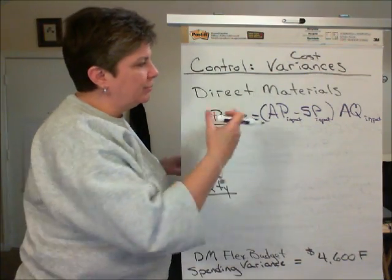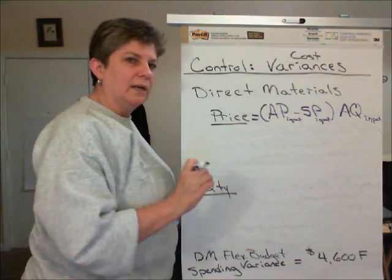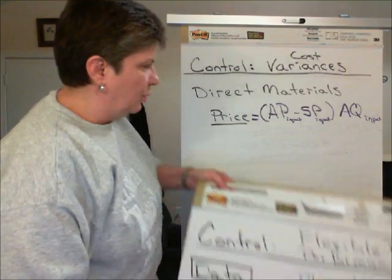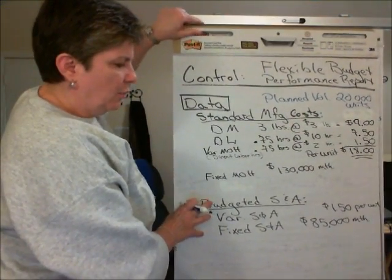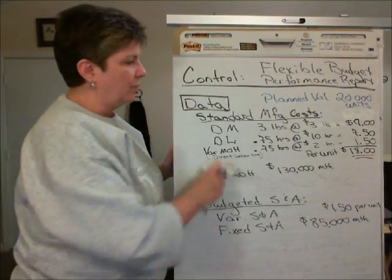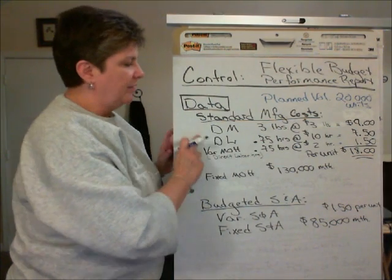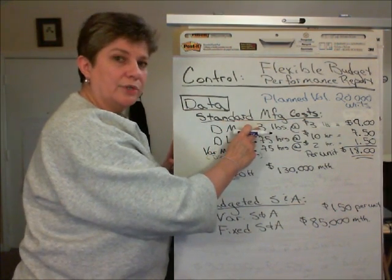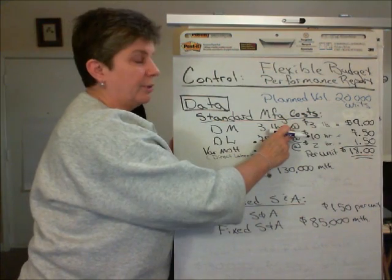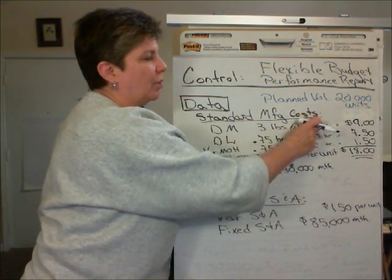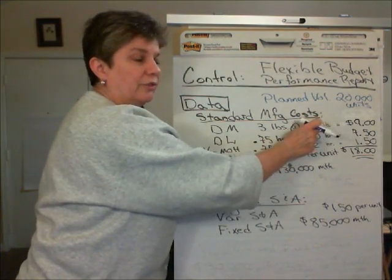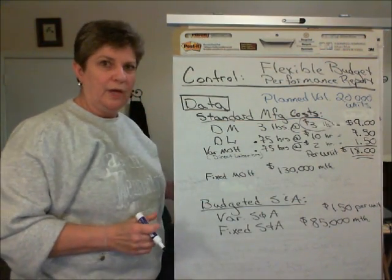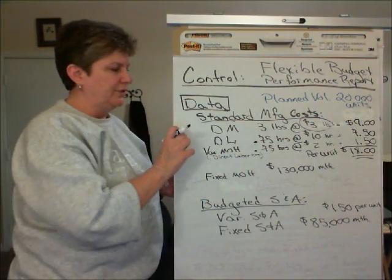Before we can put some numbers with this, we need a little more information. When we were doing the Flex Budget Performance Report, we looked at the standards. The standard cost for direct materials was three pounds of materials per unit at three dollars per pound. So our three dollars per pound of materials is our standard.